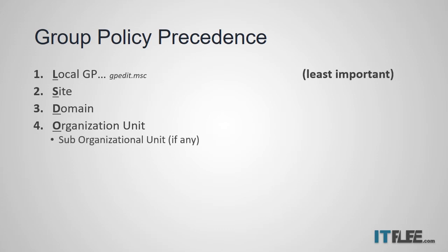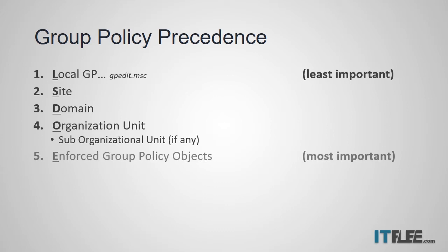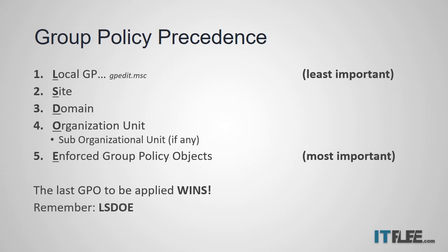That also goes for sub-OUs. So if there's an organizational unit within an organizational unit, the sub-OU will be applied last, and therefore its settings will take precedence over anything above it. Finally, we have enforced group policy objects — this is any GPO where you've right-clicked and chosen to enforce the GPO. Quick recap: you start with local, that's the least important GPO because it's the first one computed, and you end with enforced group policy objects. The last GPO to be applied always wins. You can remember this order by the acronym LSDOE — local, site, domain, OU, and enforced.